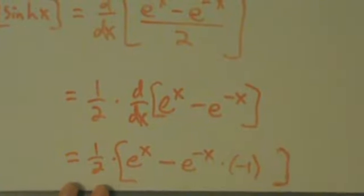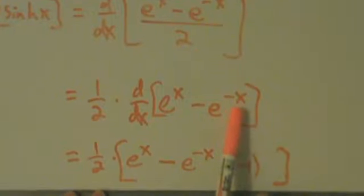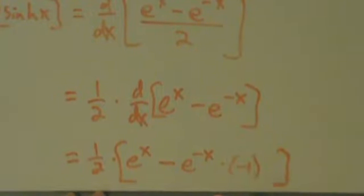All right, so again, the derivative of e to a thing is just e to that thing times the derivative of that thing. Okay, and in this case, that thing is negative x, so the derivative of that thing is the derivative of negative x, which is negative 1. All right, so let's go ahead and simplify this now.